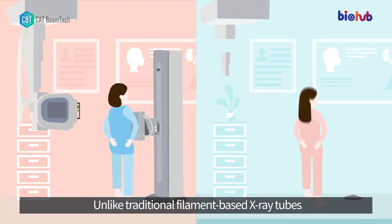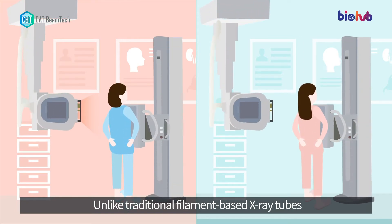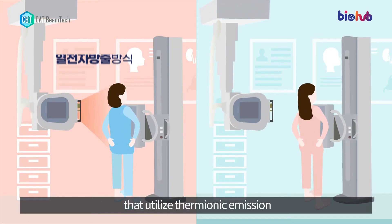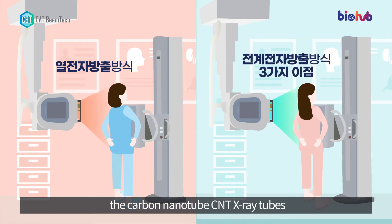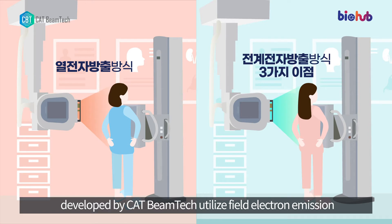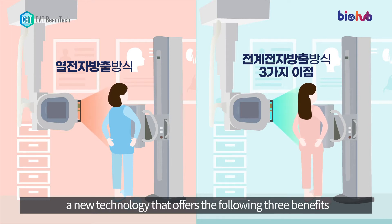Unlike traditional filament-based X-ray tubes that utilize thermionic emission, the carbon nanotube X-ray tubes developed by CAT BeamTech utilize field electron emission — a new technology that offers the following three benefits.